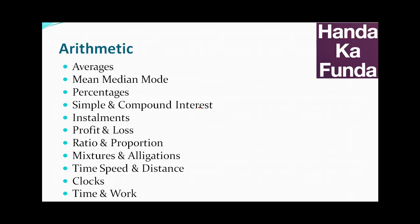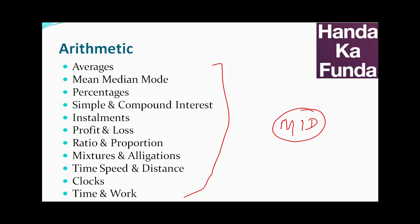So this is broadly how the arithmetic section is structured or divided. First of all, arithmetic is an important part of quant — probably a little more important than number system and modern maths, and a little less important than algebra and geometry. So it is somewhere in the middle when it comes to quant. There will be roughly 6 to 7 percent of the CAT paper that will be from arithmetic.